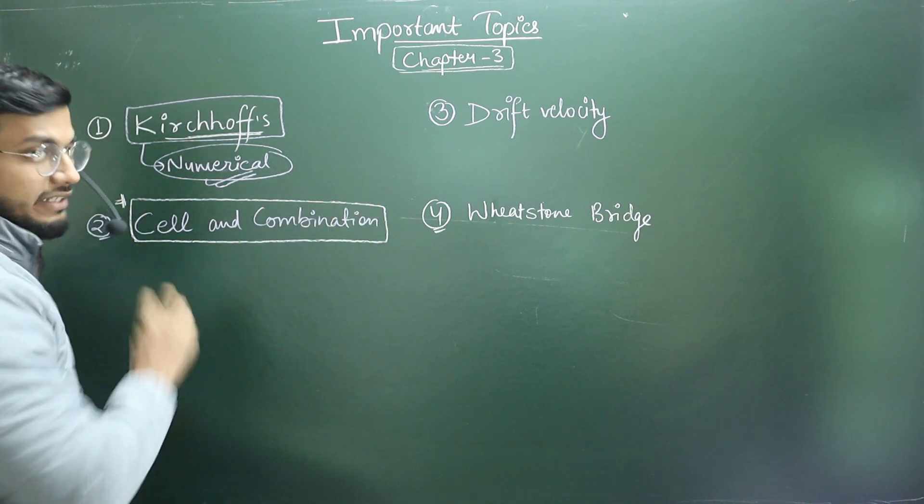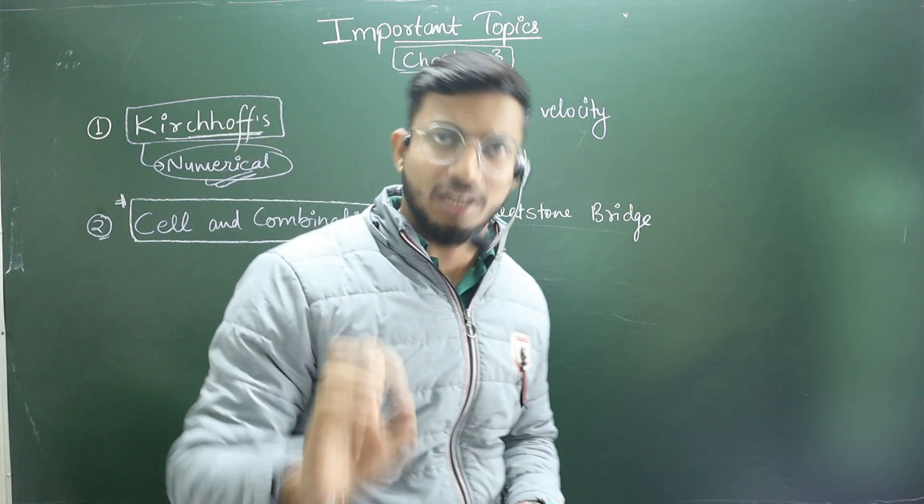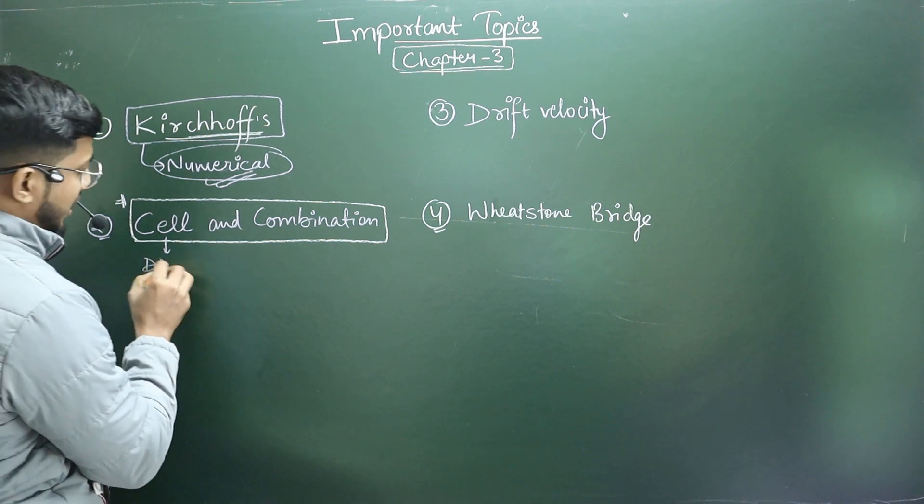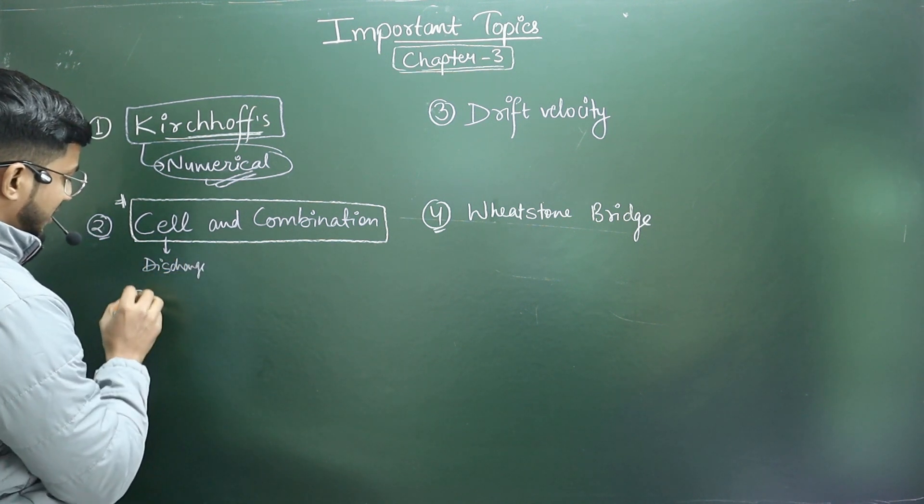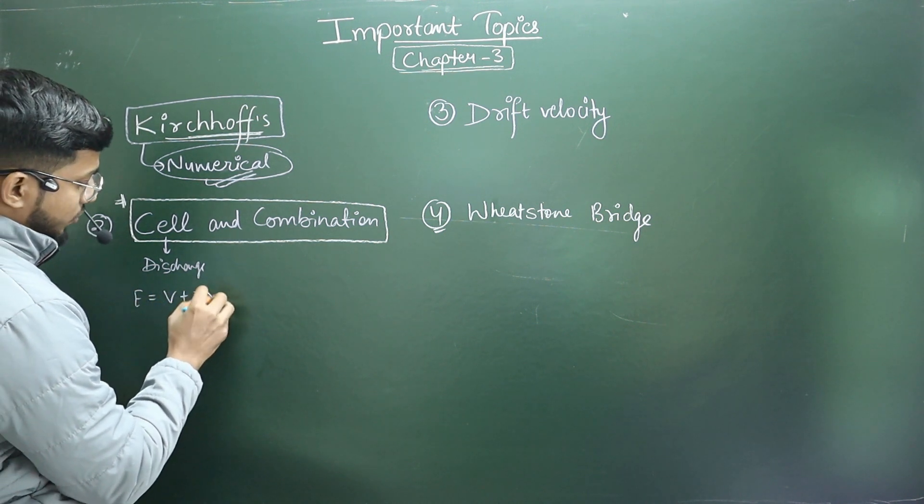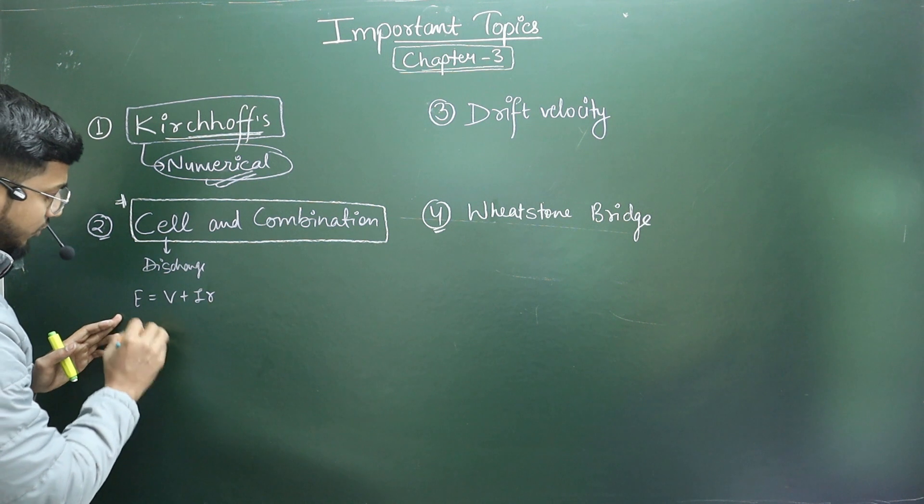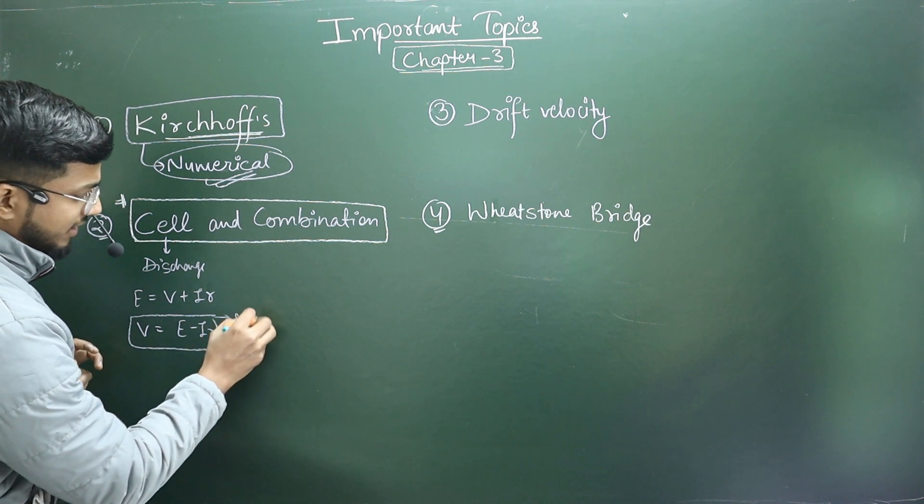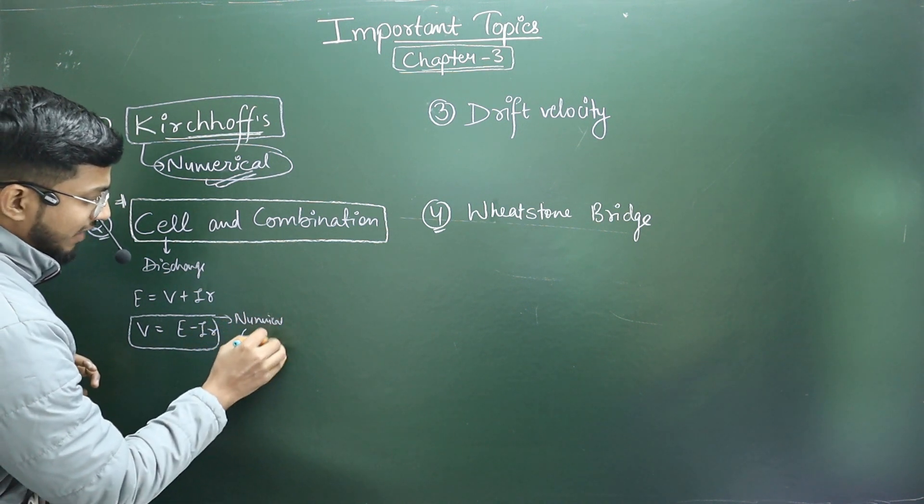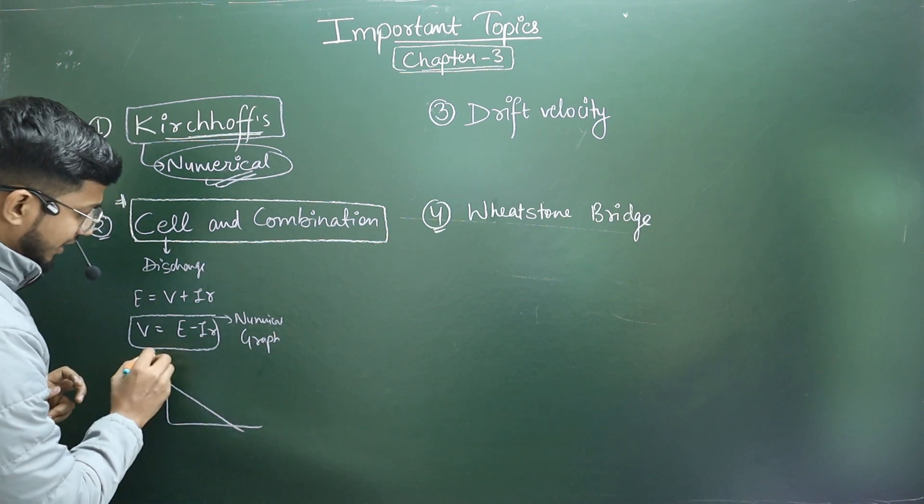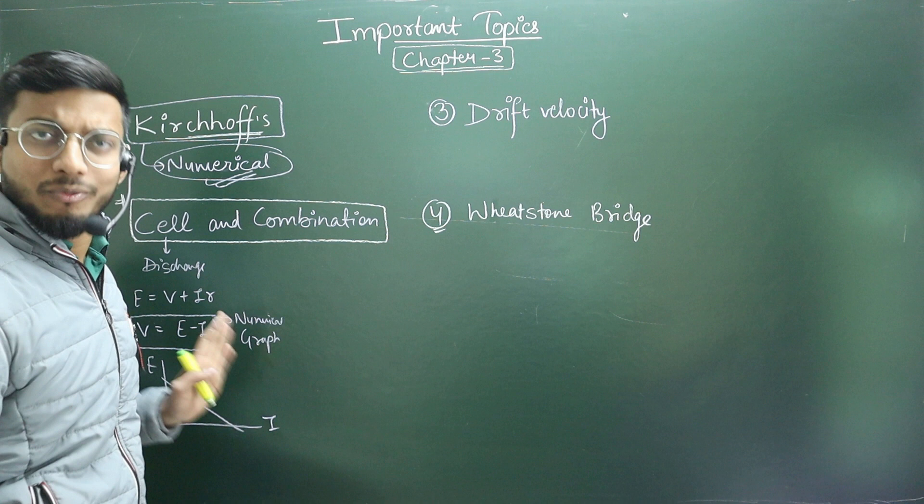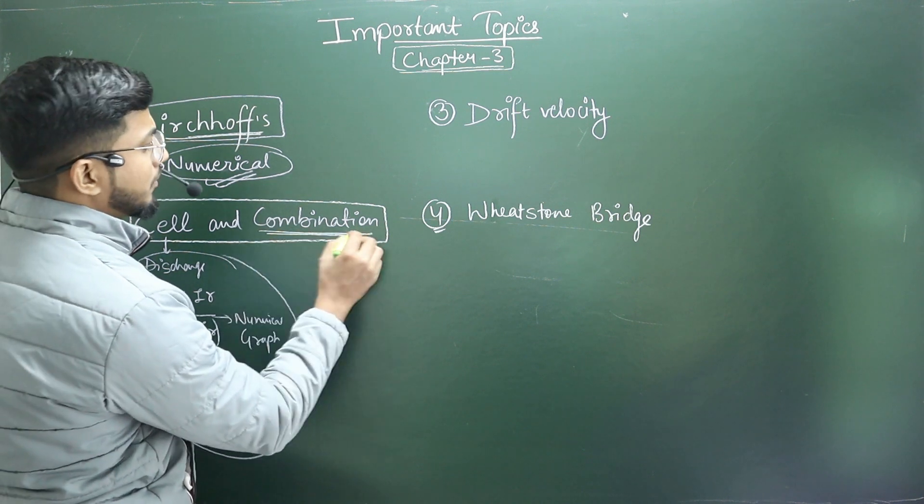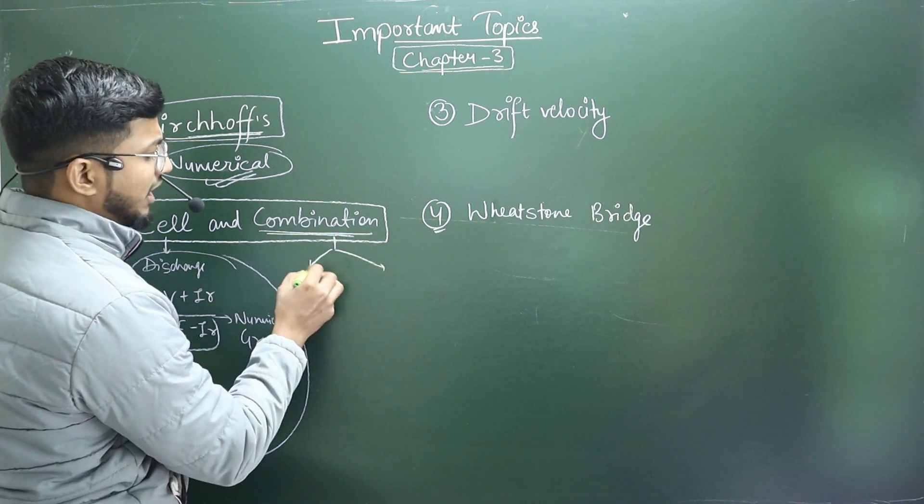Another one is the main important topic, that is cell and combination. So the chances of cell are very high in this year because in cell we have two cases. First the normal formula is discharging, which we have to discharge, in which we have to discharge, e is equal to v plus ir. Some of these are the formula and some of them have v, then e minus ir. So numerical and numerical and numerical graph you have studied, straight line graph, this is e versus i graph.